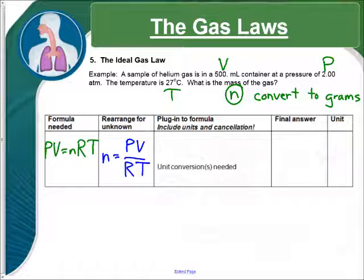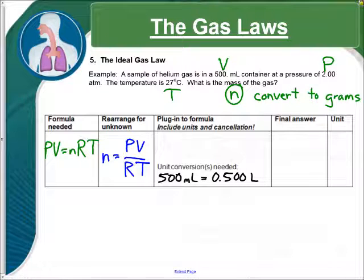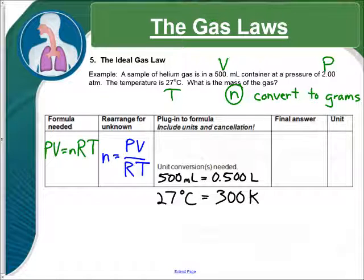We need to check to see what conversions we need, because all of them have to be in the ones that match R. So, we need to convert milliliters to liters, so 500 milliliters is 0.500 liters, and our temperature, we need to add 273 to our Celsius temperature to get 300 Kelvin.